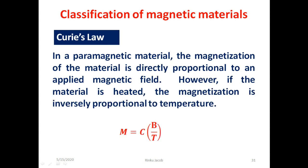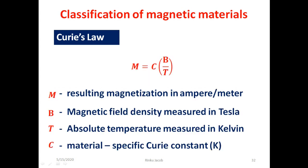Now we discuss about Curie's law. The law states that in a paramagnetic material, the magnetization is directly proportional to an applied magnetic field; however, if the material is heated, the magnetization is inversely proportional to temperature. That is, magnetization M equals C times B by T, where M is the resulting magnetization in ampere per meter, B is the magnetic flux density in Tesla, T is the absolute temperature in Kelvin, and C is the specific Curie constant, which depends upon the type of material chosen.